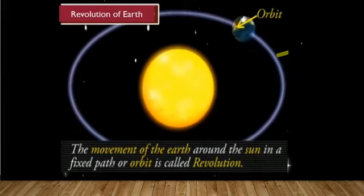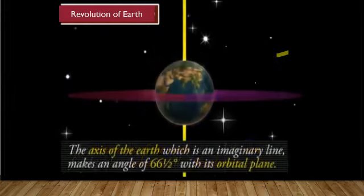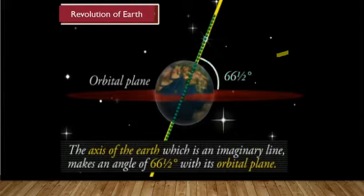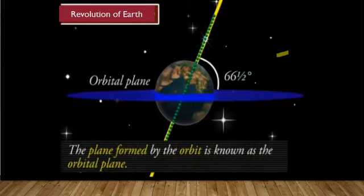This is the orbit of the Earth. The axis of Earth, which is an imaginary line, makes an angle of 66.5 degrees with its orbital plane. The plane formed by the orbit is known as orbital plane.